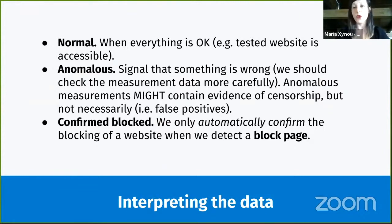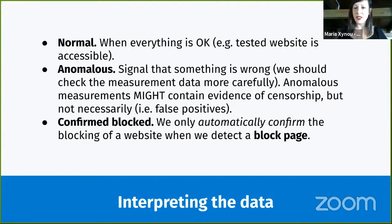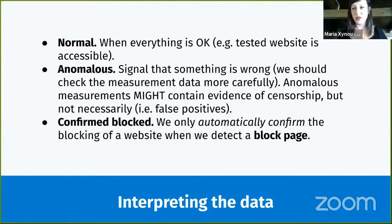That said, there are some cases of censorship we are able to automatically confirm — specifically when blocking is implemented through a block page. A block page is a web page your ISP gives you instead of the content of the website you're trying to access. Around the world, when accessing blocked websites, you may have seen a notification telling you that you're not allowed to access a specific website per a certain regulation. Block pages have fingerprints, which means we can add those fingerprints to our database and therefore automatically confirm these forms of censorship.